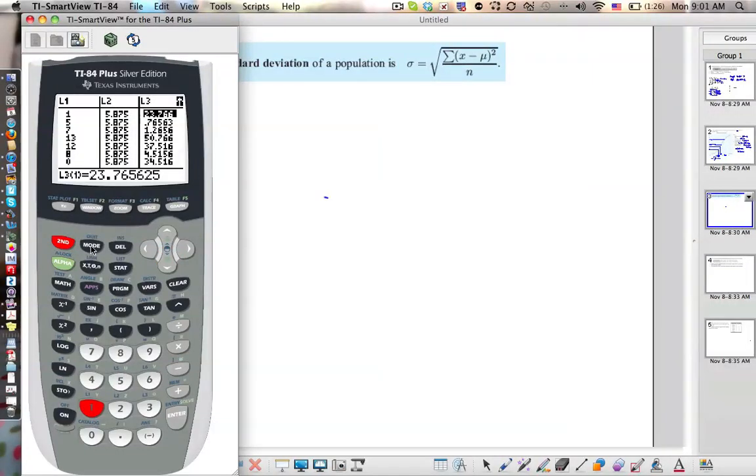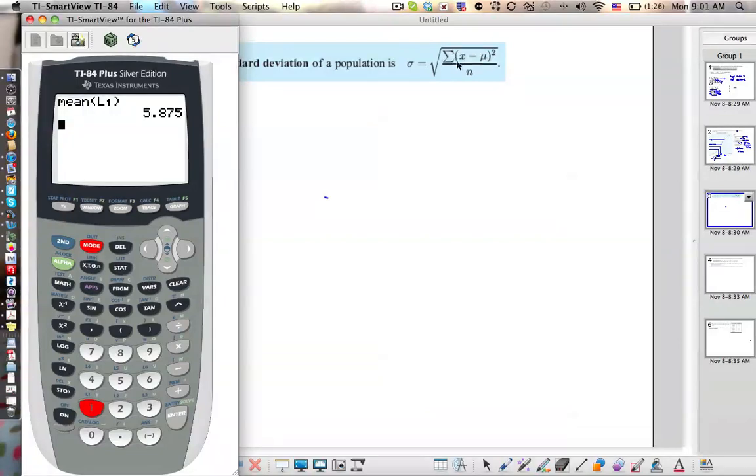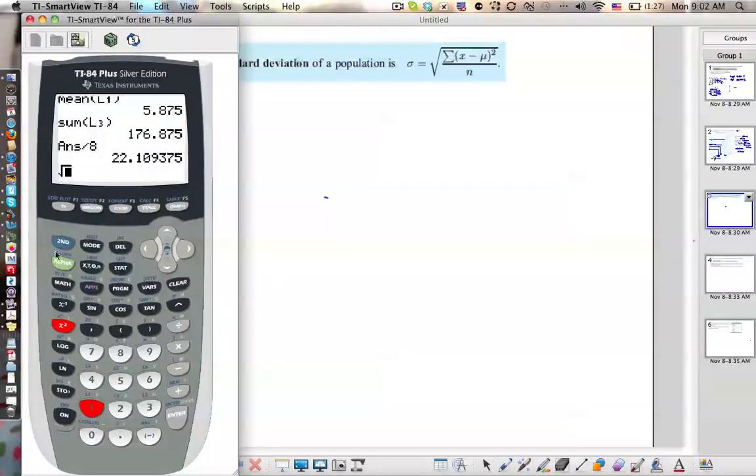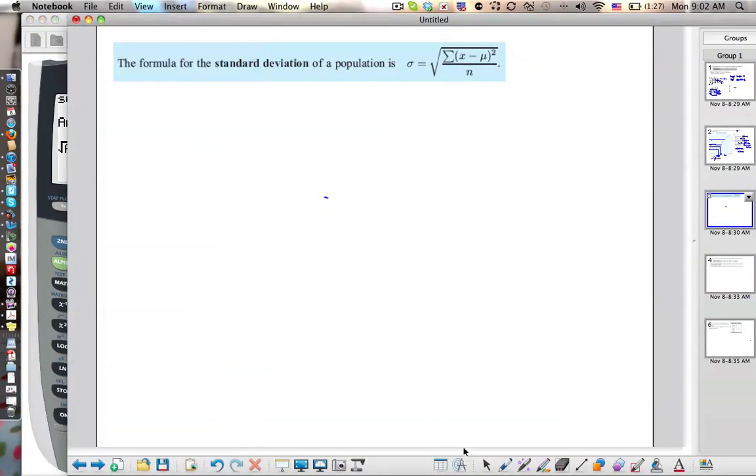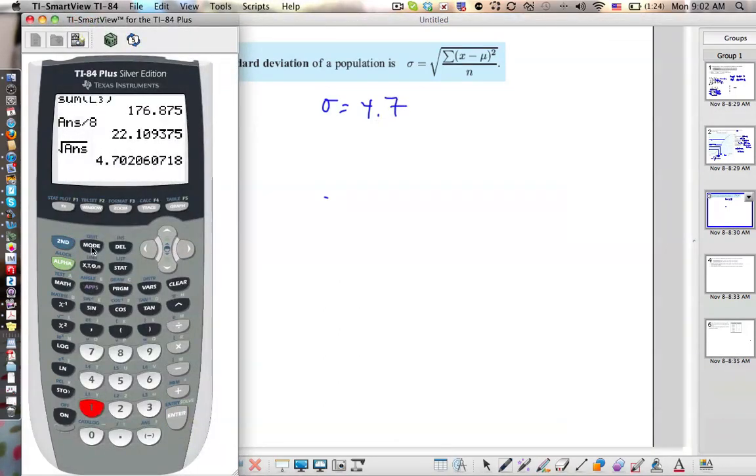Okay, we can get out of this main screen. It says to now add up all of these values, so we're going to go 2nd stat, sum. Number 5, sum of L3. We're in yes. Okay, that's this, and then we want to divide by 8. Yes, because that's how many numbers we have. Divide by 8 is this, and then take the square root of our answer, which is this. So our standard deviation, and we write this with a sigma. Sigma is 4.7.